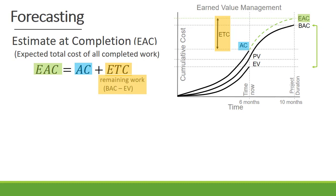In forecasting, our estimate at completion is the expected total cost of all the completed work on our project, and it is calculated by adding our actual cost plus our estimate to complete, which equals our estimate at completion. Our estimate to complete represents the remaining project work, and it is calculated by subtracting our earned value from our budget at completion at a specific point in time.